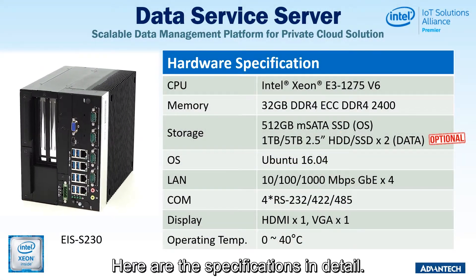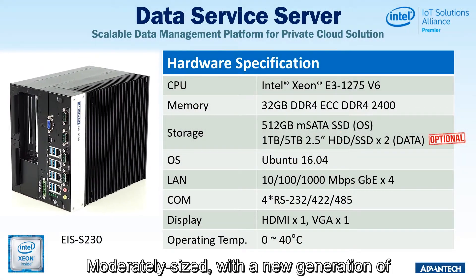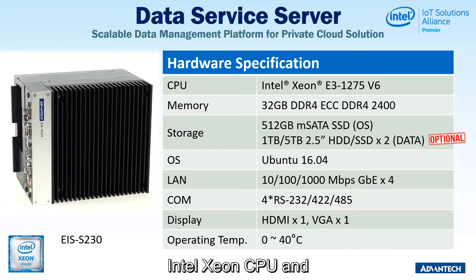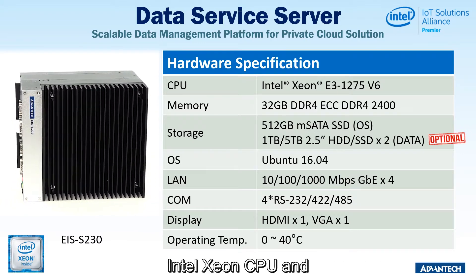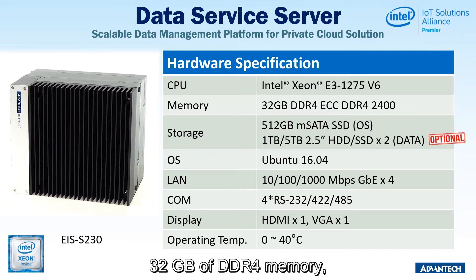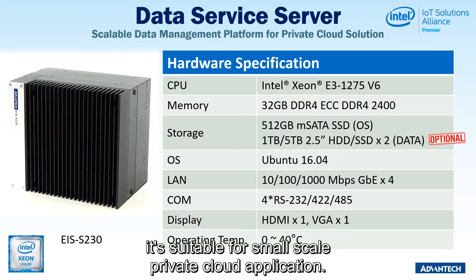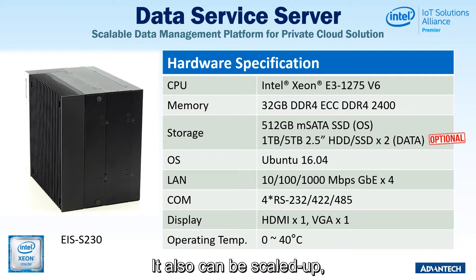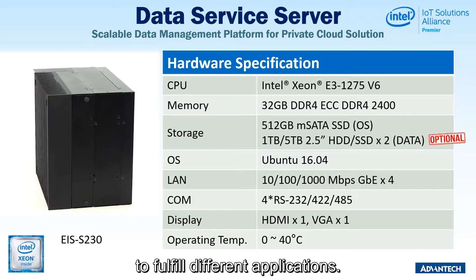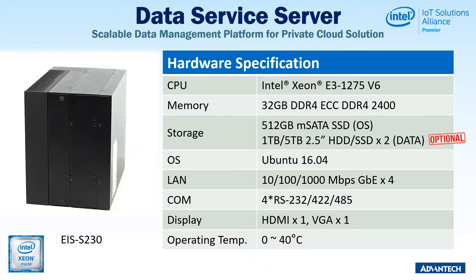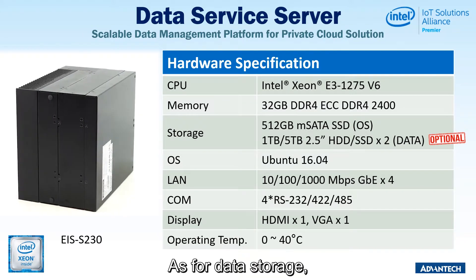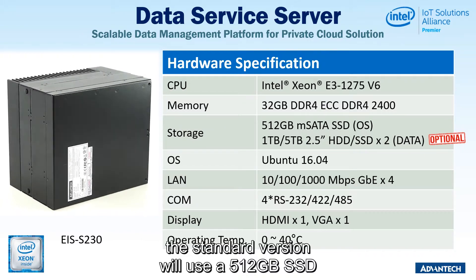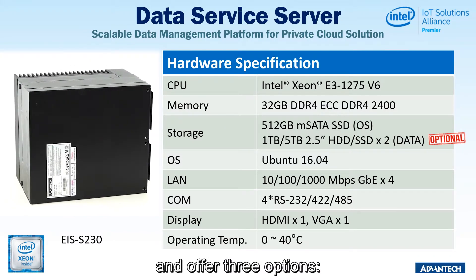Here are the specifications in detail. Moderately sized with a new generation Intel Xeon CPU and 32 GB of DDR4 memory, it's suitable for a small-scale private cloud application, and can be scaled up to fulfill different applications. As for data storage, the standard version uses a 512 GB SSD and offers three options.